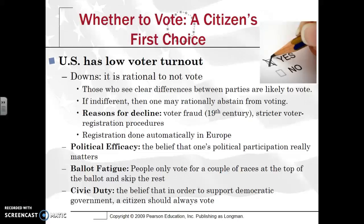Among some of the reasons for this decline include voter fraud — specifically in the 19th century — as well as stricter voting registration procedures, especially in the South, with some states now requiring photo identification. When you compare the United States to Europe, registration is done very differently. In Europe, many countries have same-day registration or it's done automatically, whereas in the United States, the onus is on the individual to sign up.